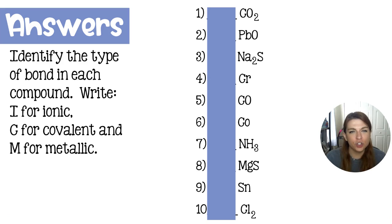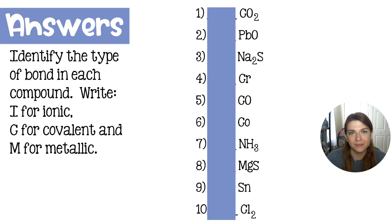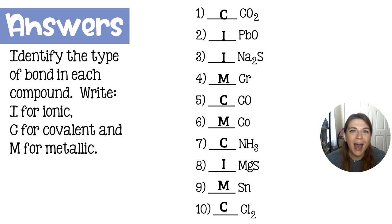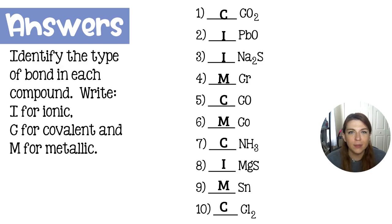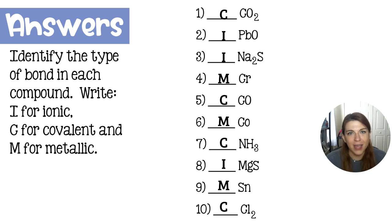Take a look at these substances and determine if they have ionic bonds, covalent bonds, or metallic bonds. The way I do this is to look for a metal ion or a metal atom. If there is no metal atom at all, that's going to make it covalent. Look at 1, 5, 7, and 10 — none of those have metals, so they are going to be deemed covalent.